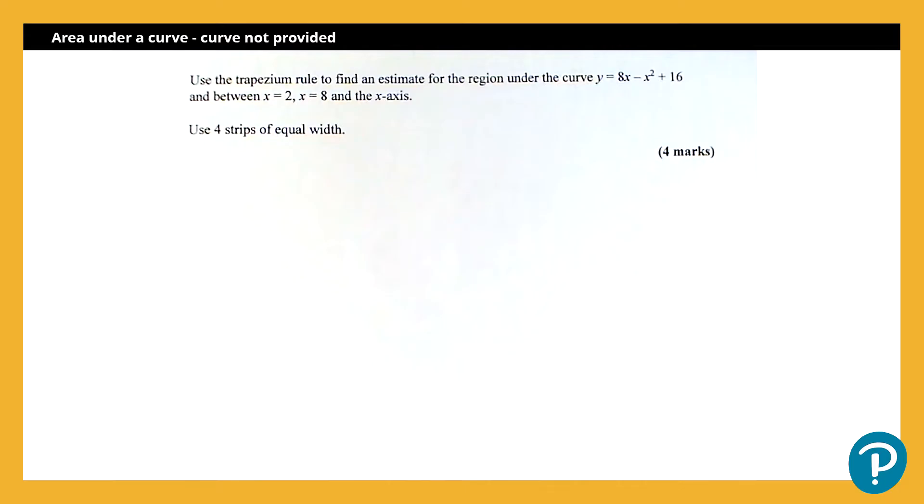We may get a graph similar to GCSE, but we may also get a question like this one where we have no curve drawn. And the other difference on this specification is that the use of the trapezium rule is required. Now, the trapezium rule is not on the GCSE specification. If you used it to answer one of these questions, that would be fine, but it is not on the specification, so it's not expected. It is expected here.